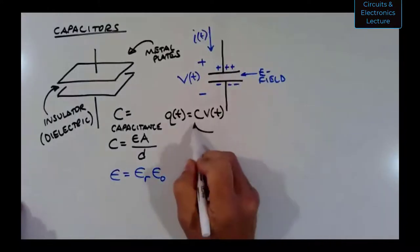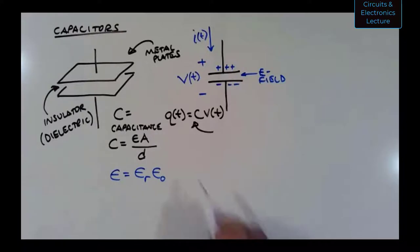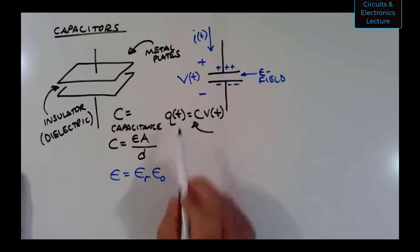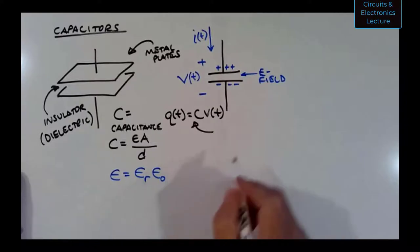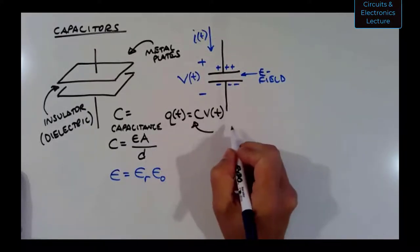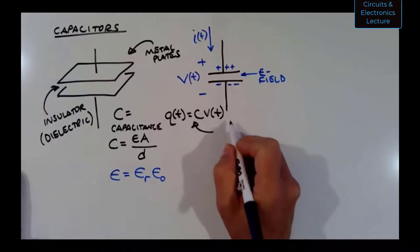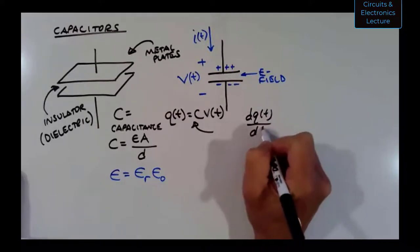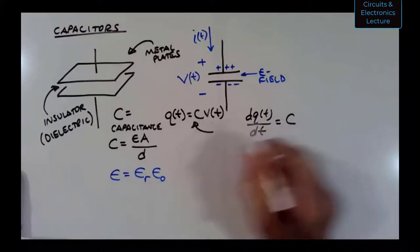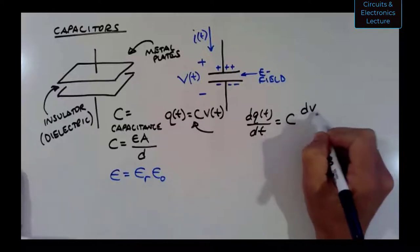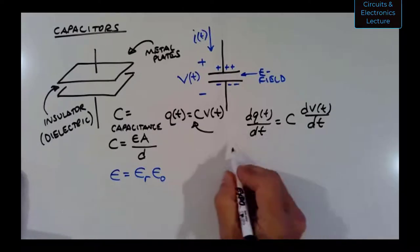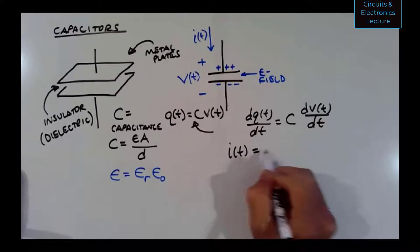Q = CV tells us how much charge is stored for a given voltage. What's more interesting from a circuits perspective is taking the derivative: dQ/dt = C × dV/dt. Since dQ/dt is current, we get i(t) = C × dV/dt. This is the key takeaway. When voltage is constant, the derivative is zero and i is zero. There is only current when voltage is changing.